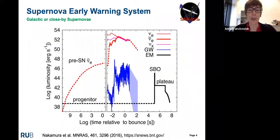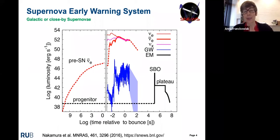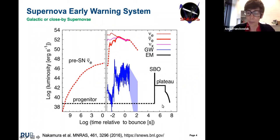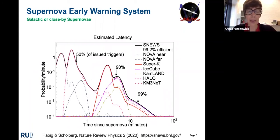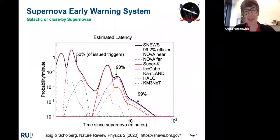If a supernova happened today, we would have 10,000 neutrinos depending on the detector – it would really be spectacular. We would also expect a gravitational wave signal at the same time, and all this would happen before the actual electromagnetic signal, which is first a shock breakout and then the typical supernova light curve in optical. With SNEWS, more than 50% of the triggers would go out well below one minute.